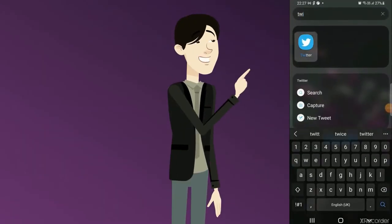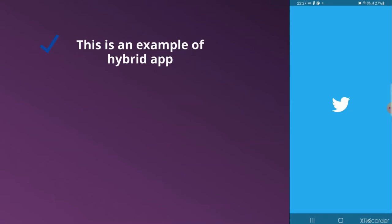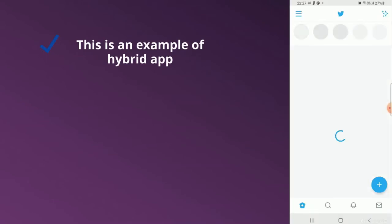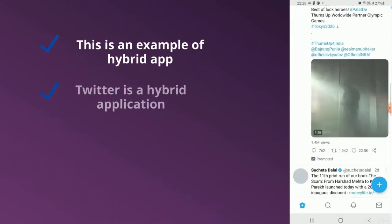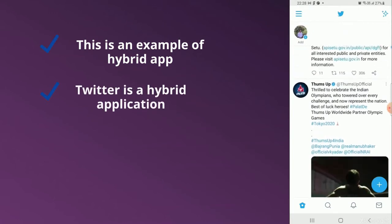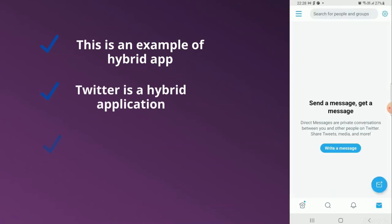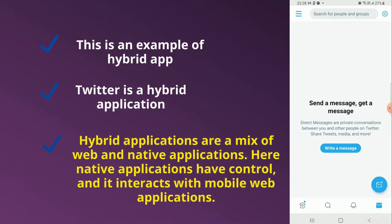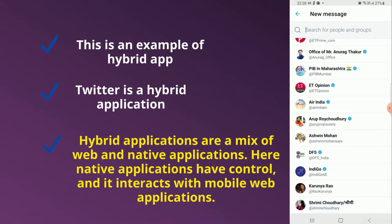Hybrid applications are a mix of web and native applications. The native application has control and it interacts with mobile web applications. Like native apps, you can download hybrid applications from the Play Store and install them on your device. Here I have shown the example of the Twitter app — it is a hybrid app.